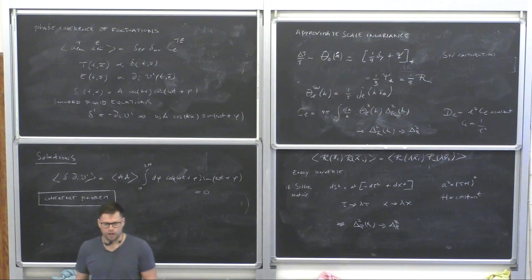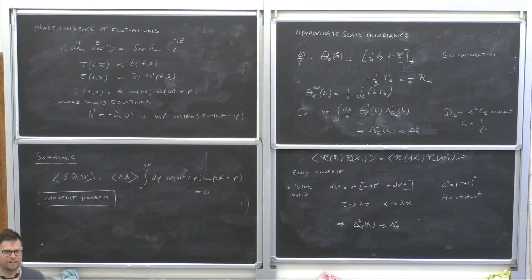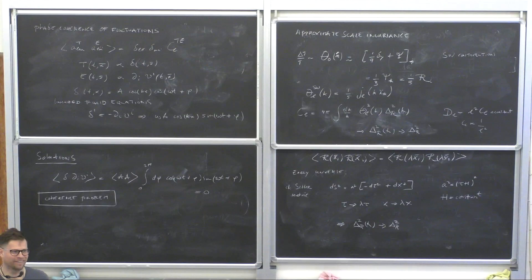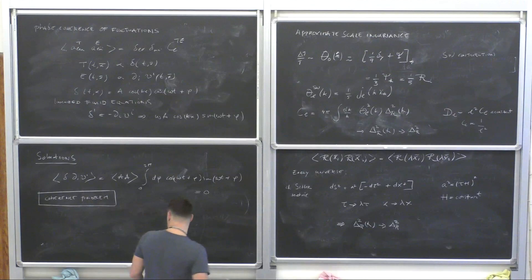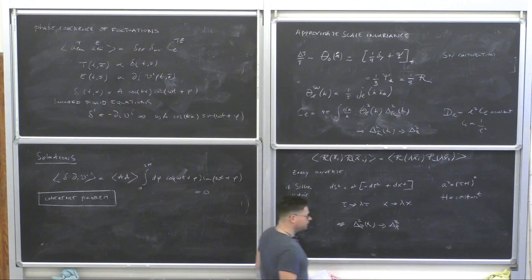Now we move on to actually writing down a theory of inflation — single-field slow-roll inflation. The main point is we need a particle horizon that shrinks. Remember R_H = 1/(aH).